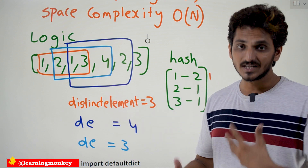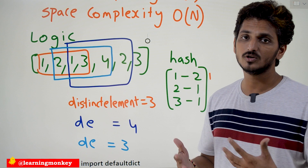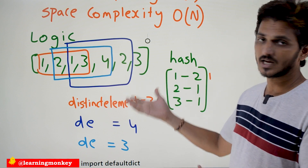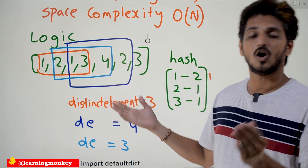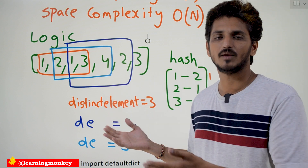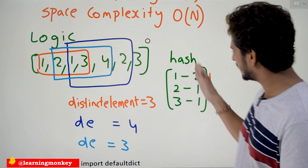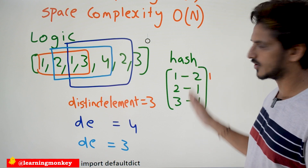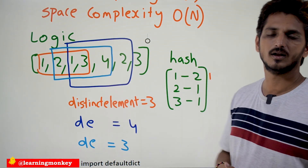This is the technique we are going to follow using the hash table. We can do it in order of n time by adding an extra space of order of n.